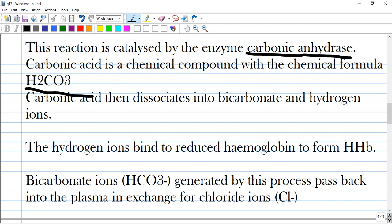Carbonic acid then dissociates into bicarbonate and hydrogen and ahead into the water and carbon dioxide. So hydrogen ions bind to reduced hemoglobin to form hydrogen hemoglobin.